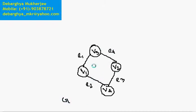This is called an undirected graph, because if we have connectivity between V1 and V3, you can go from V1 to V3 as well as from V3 to V1. But if we give some direction, you can go from V1 to V3 but you don't have a direct path from V3 to V1. Similarly, you can go from V2 to V4 but not directly from V4 to V2. This is called a directed graph. If there are no arrows, it is an undirected graph.